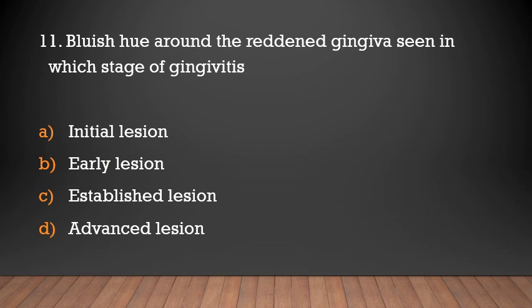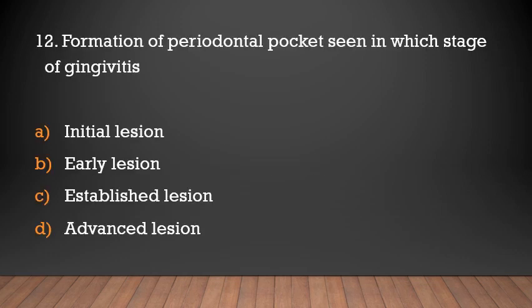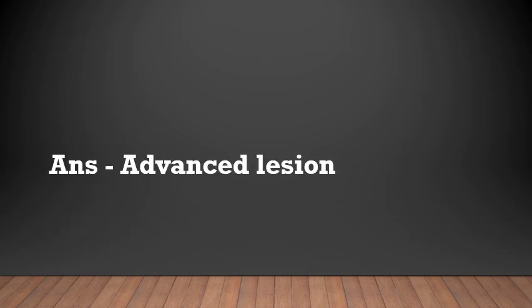Bluish hue around the reddened gingiva is seen in which stage of gingivitis? Initial lesion, early lesion, established lesion, or advanced lesion? The answer is established lesion. Additionally, formation of periodontal pocket is seen in advanced lesion of gingivitis.